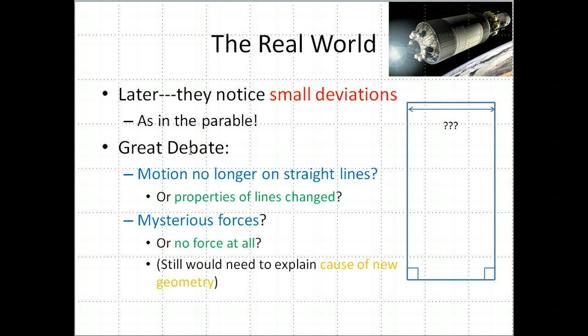Here's the great debate between the spacemen. Is it true that motion is no longer going along straight lines? When I throw a rock, is it being deflected away from a straight line? Or do we still call them straight lines because there's no force we can see, just the properties of straight lines have changed slightly but significantly?